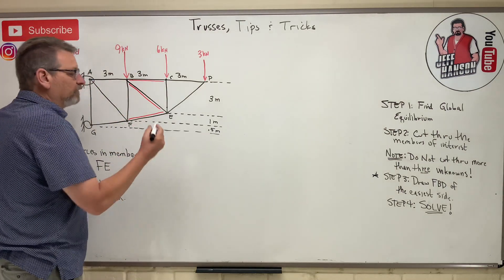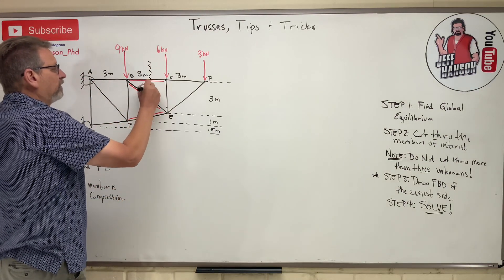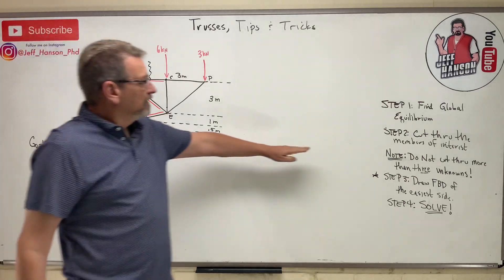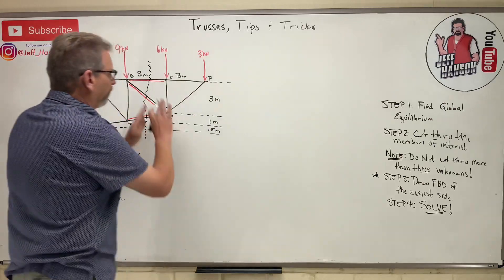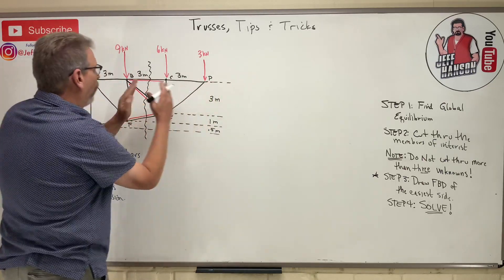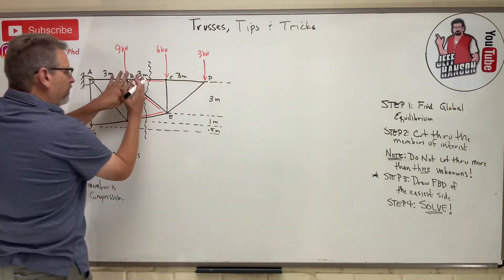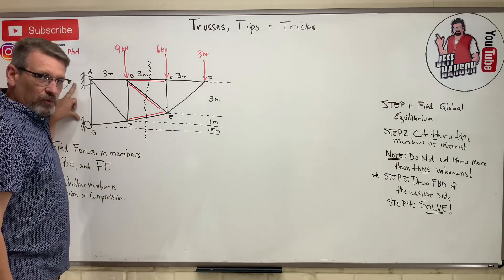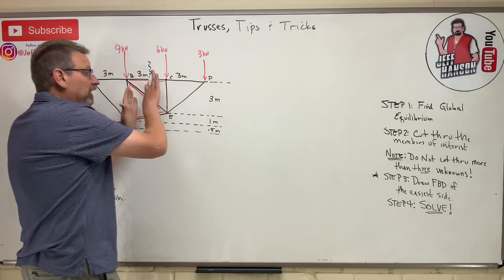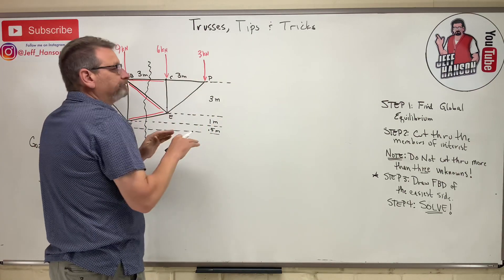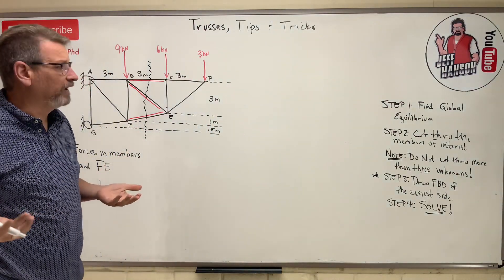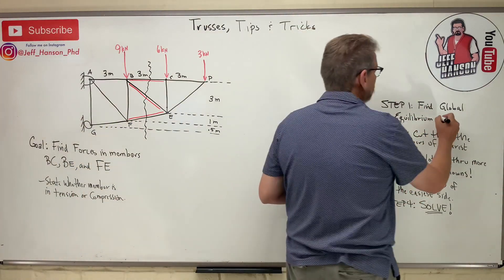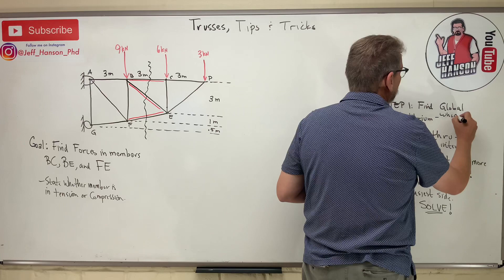If we cut through the members of interest right through there, it says draw the free body diagram of the easiest side. So we can draw the free body diagram of that side or this side. Now if we draw this side, the left side, then we're going to have this global equilibrium stuff on it. But if we draw the right side rather, there's no global over there.